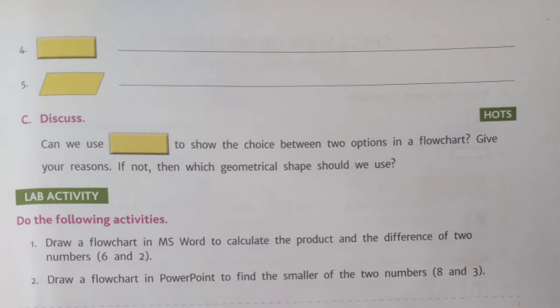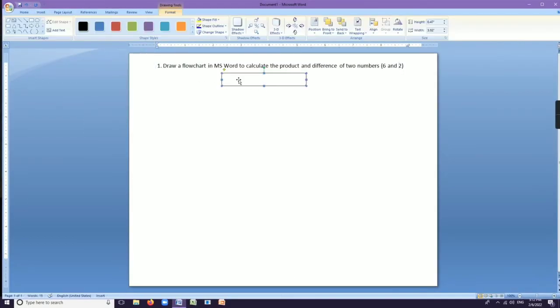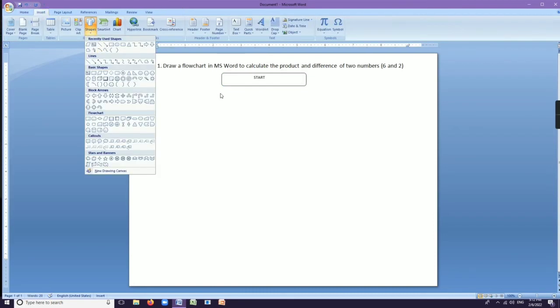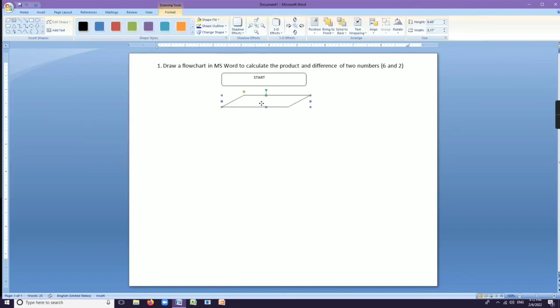In the same page, we can see two lab activities. Question number one: draw a flowchart in MS Word to calculate the product and difference of two numbers. Question number two: draw a flowchart in PowerPoint to find the smaller of the two numbers. After watching this video, you have to write these two questions in your notebook and draw the flowcharts. Our first question uses the numbers 6 and 2.